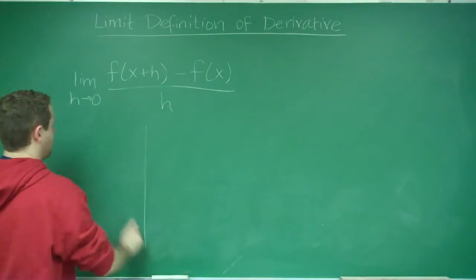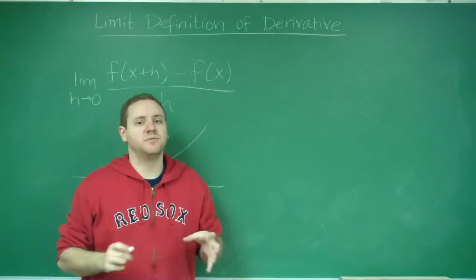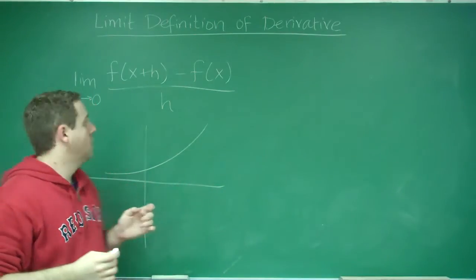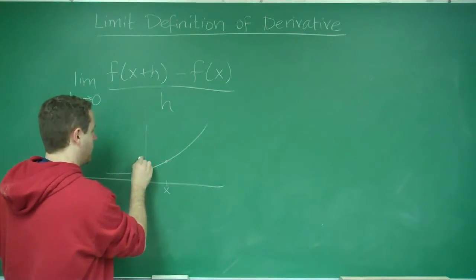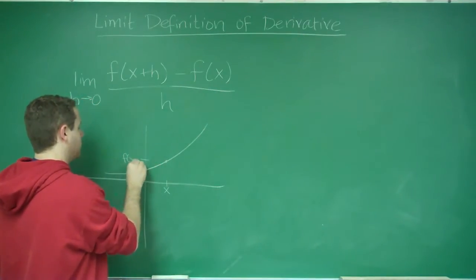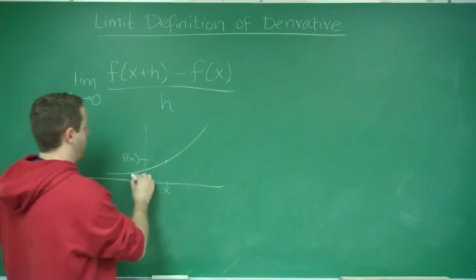Graphically what this means, because remember, in finding the derivative we're trying to find the slope of the tangent line. We have some point here, let's call this x. Right here is f of x, and we're trying to find the slope at that point.